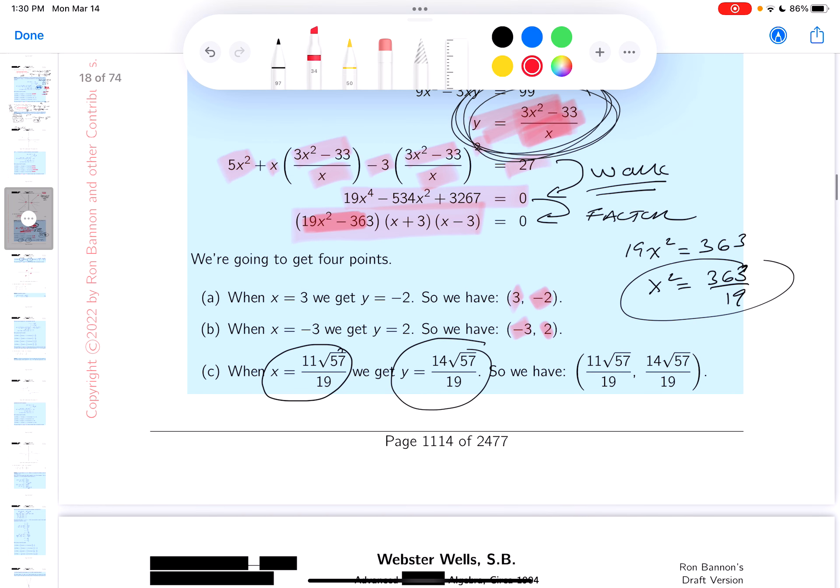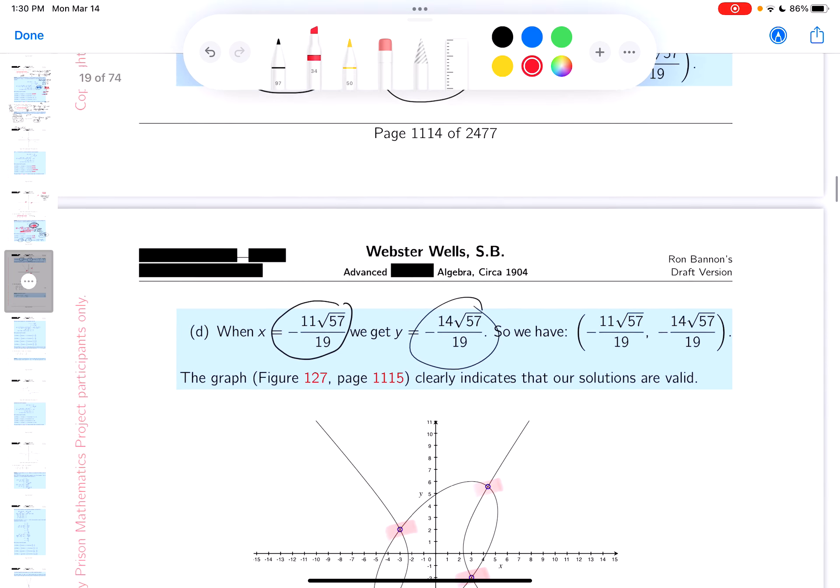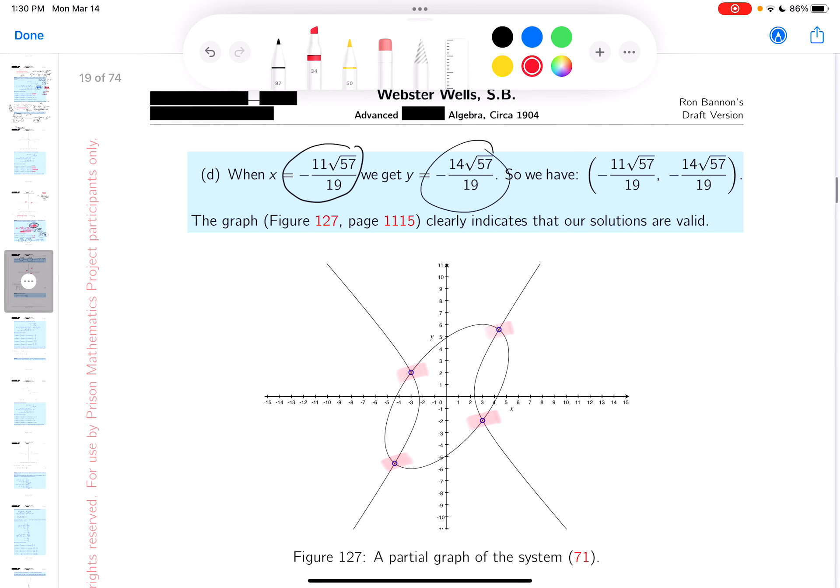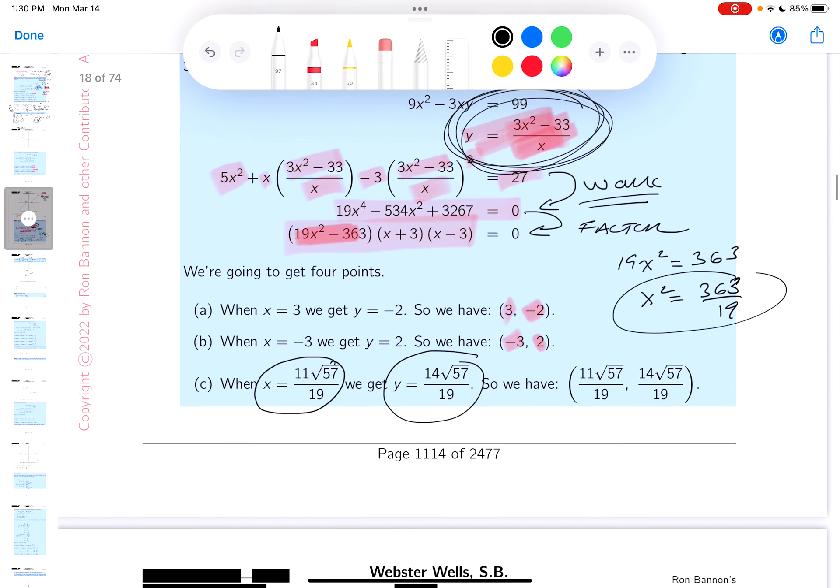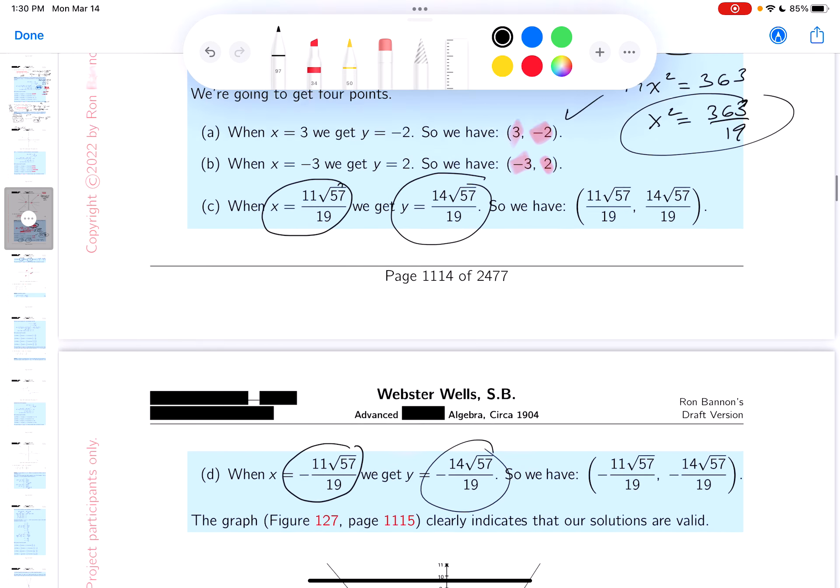Now what are the easy points I got? You know (3, -2), let me tell you where that is. That's right there. We just did this one over there. (-3, 2). That's right over here.